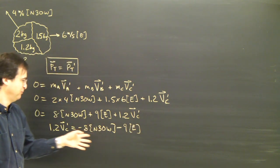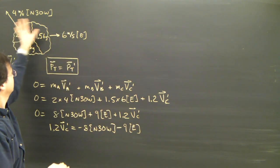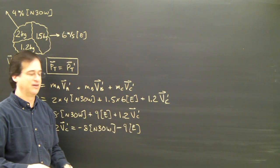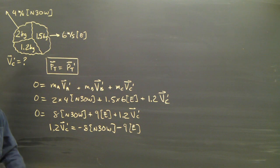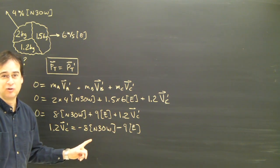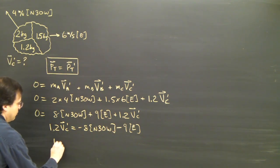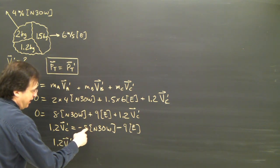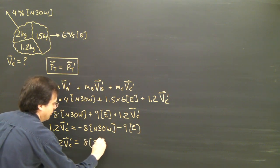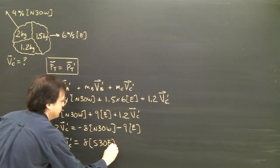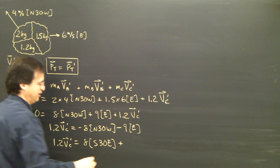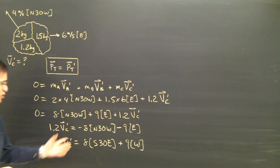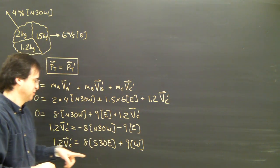All I'm doing here is rearranging the vector equation and solving for the unknown. Now what I need to do is change the negatives into positives and change the direction. So 1.2 v_c afterwards: the opposite of 8 north 30 west will be 8 south 30 east, and I change negative 9 east into plus 9 west. If you're not sure what I'm doing here, check the video on vector subtraction.